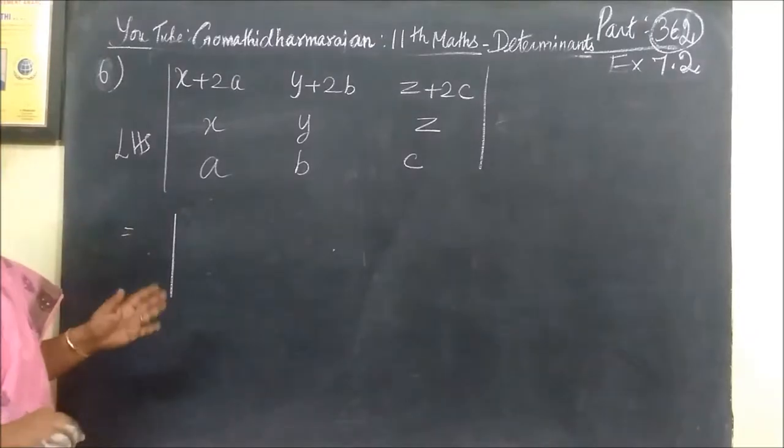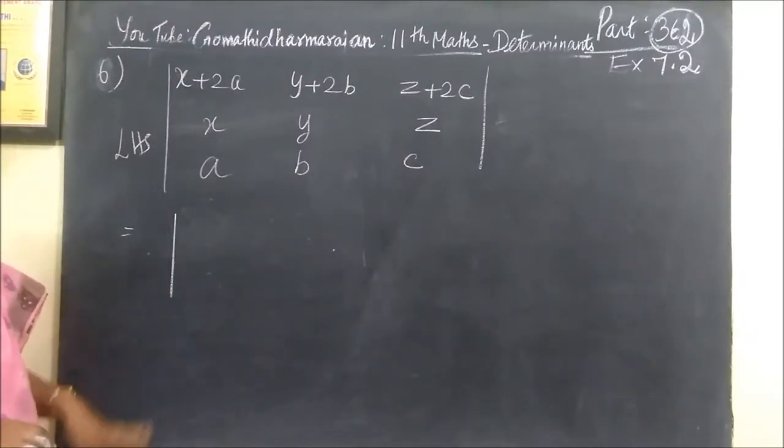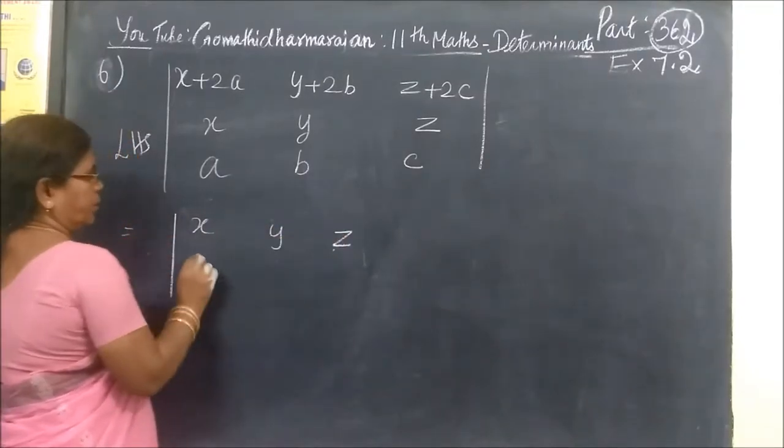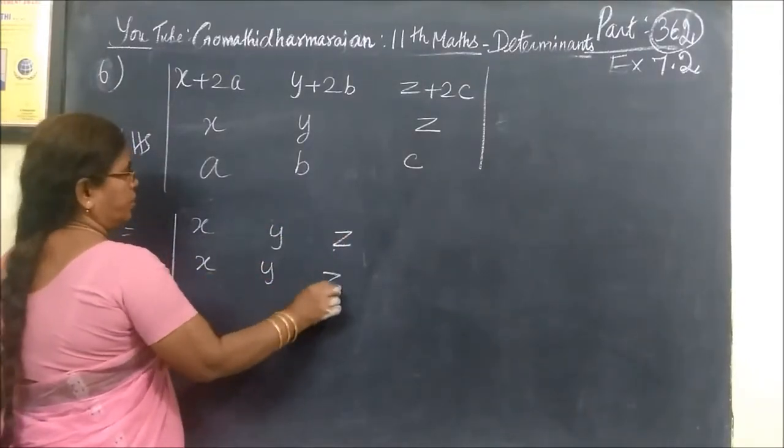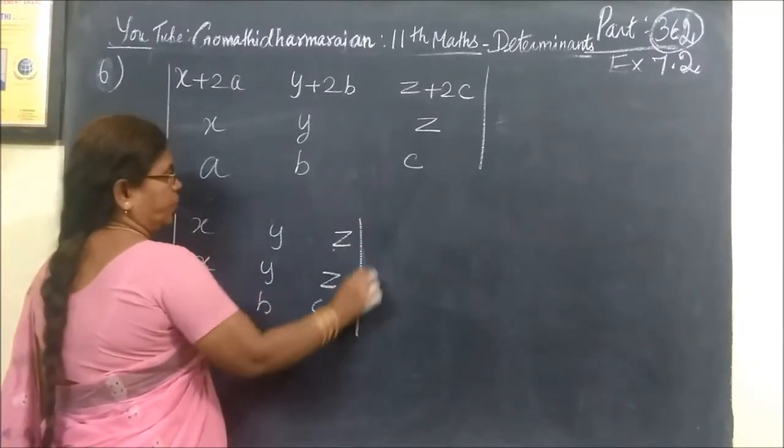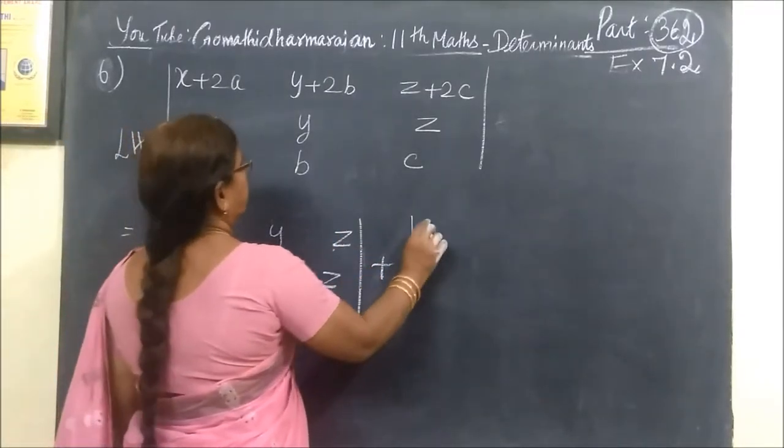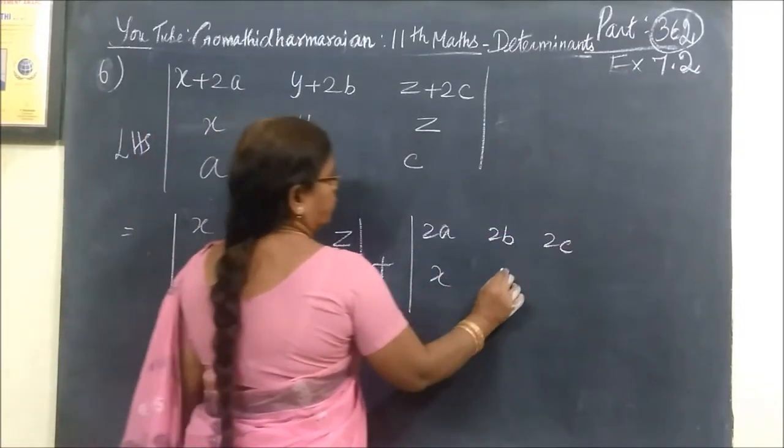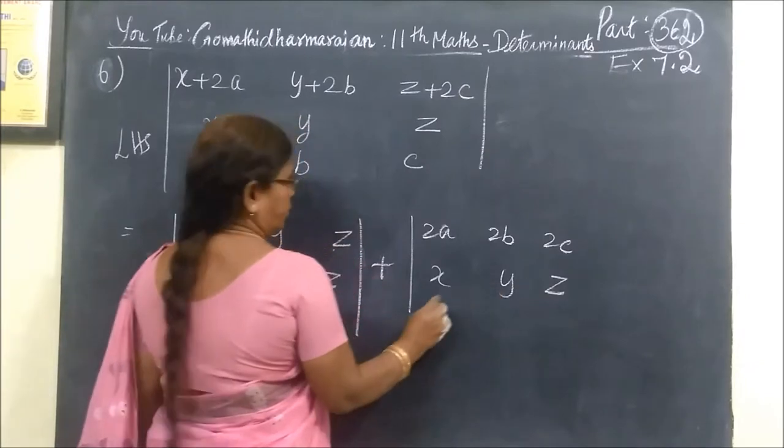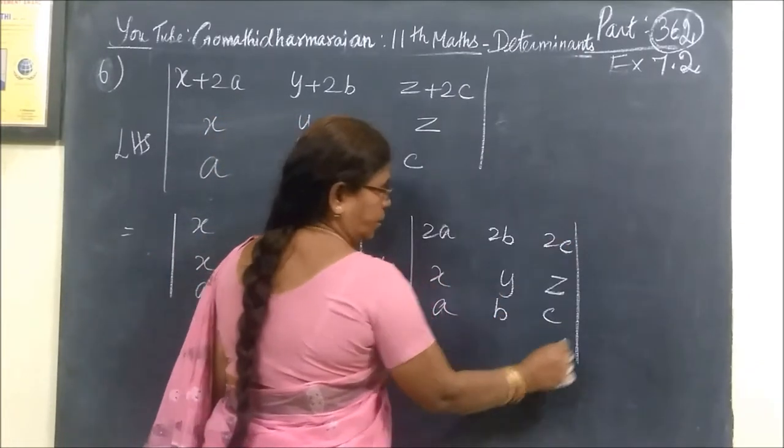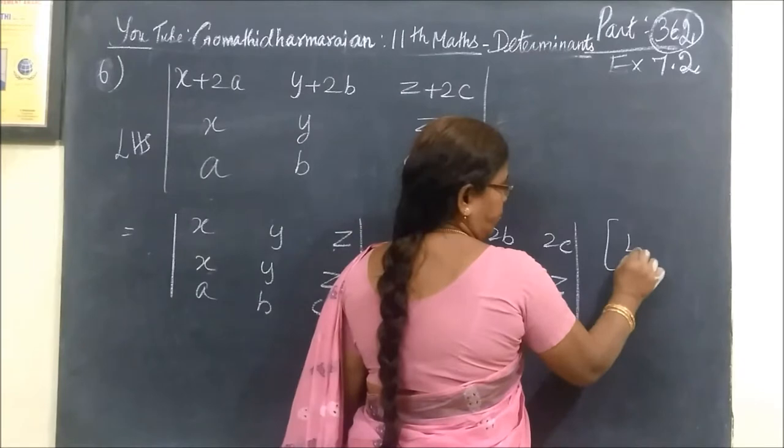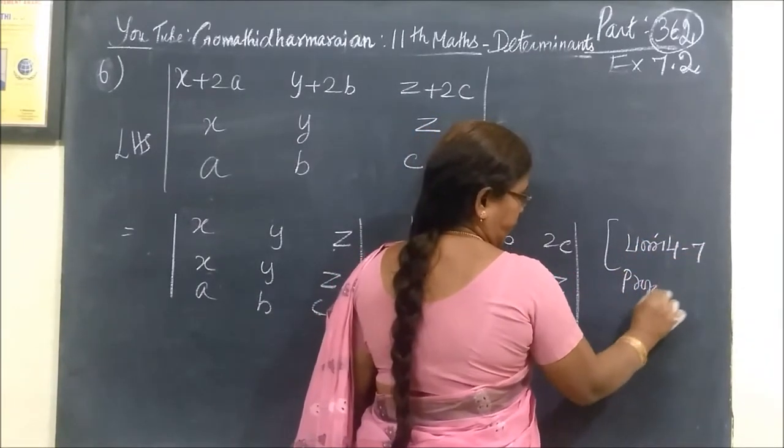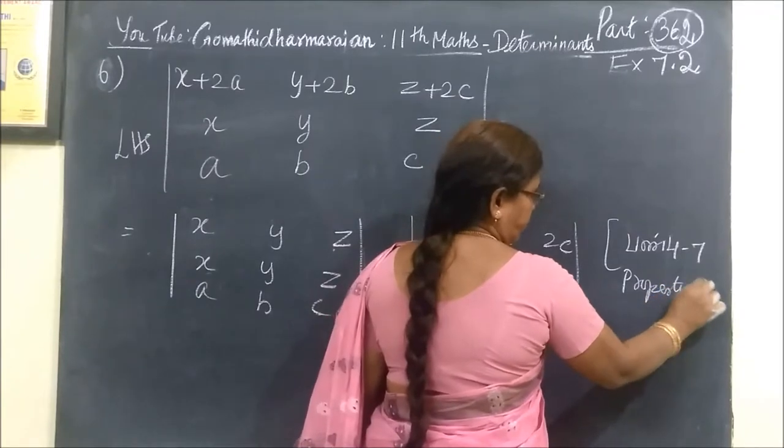Two results. Now X, Y, Z, then X, Y, Z, A, B, C, then plus 2A, 2B, 2C, then X, Y, Z, then A, B, C. One, two, seven. Property seven. Two rows, row and column, one row.